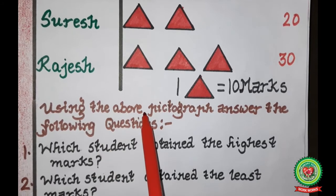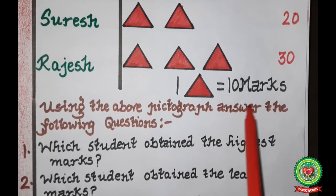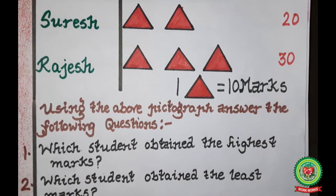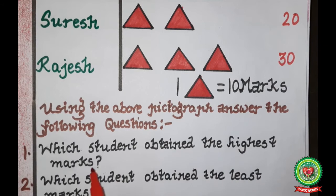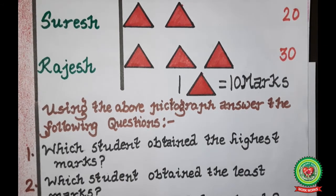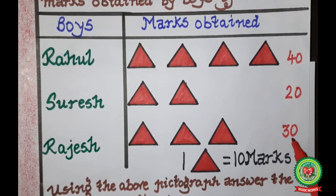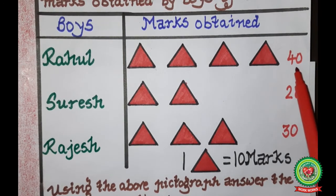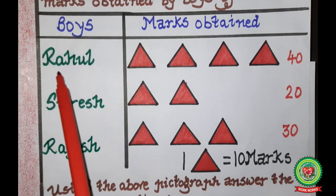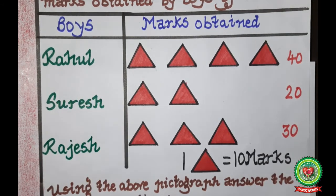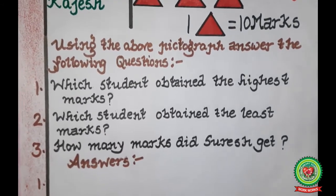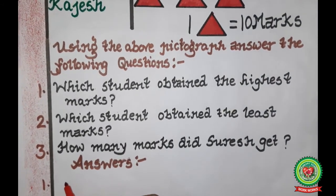Using the above pictograph, answer the following questions. Question number one: which student obtained the highest marks? Comparing 40, 20 and 30, the highest is 40. The student who obtained 40 marks is Rahul, so the answer is Rahul.